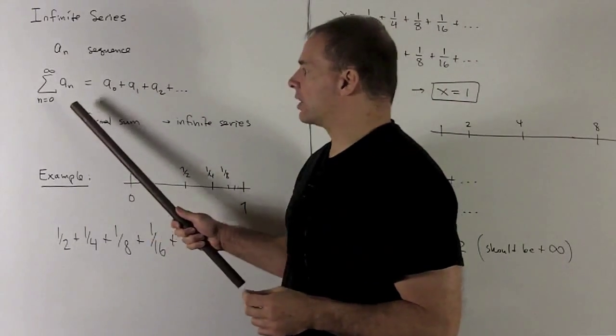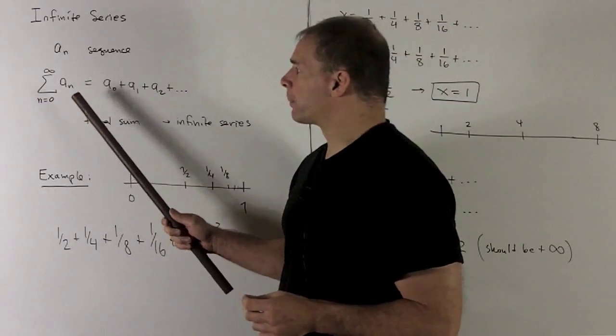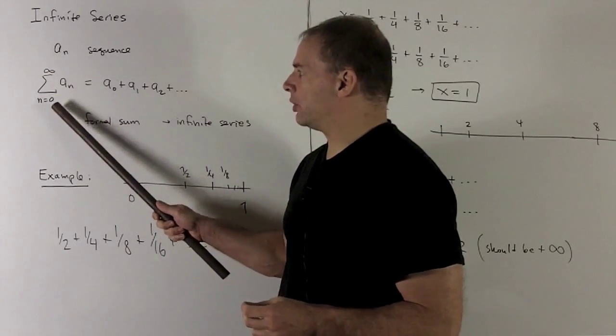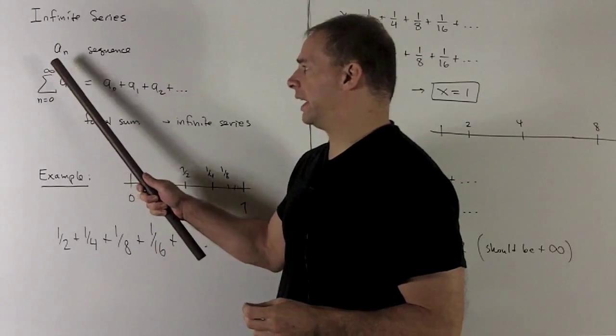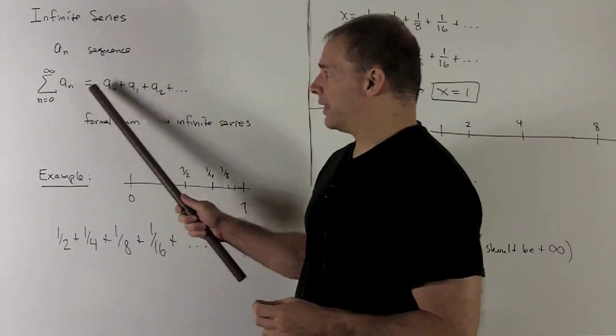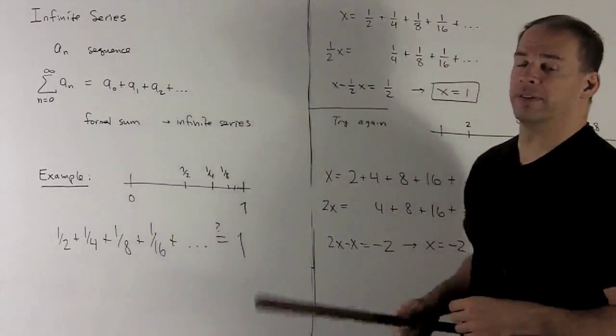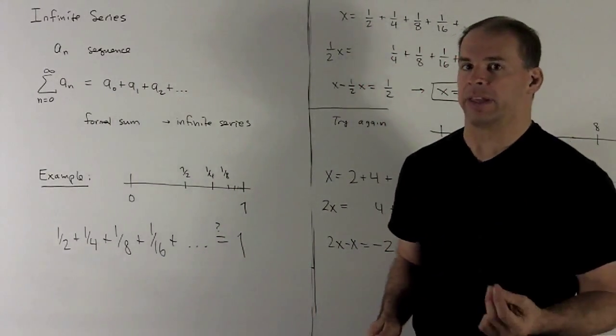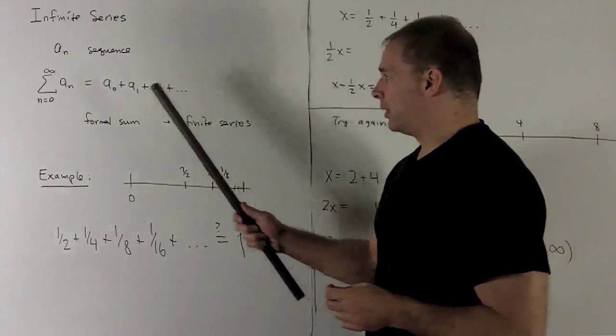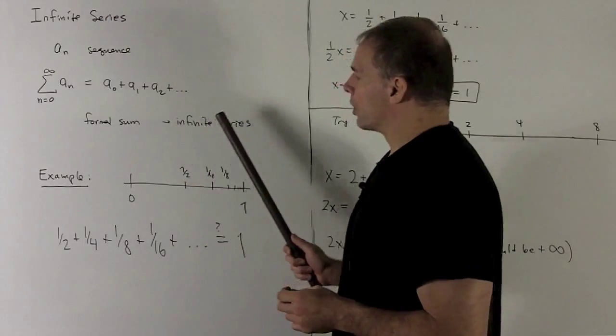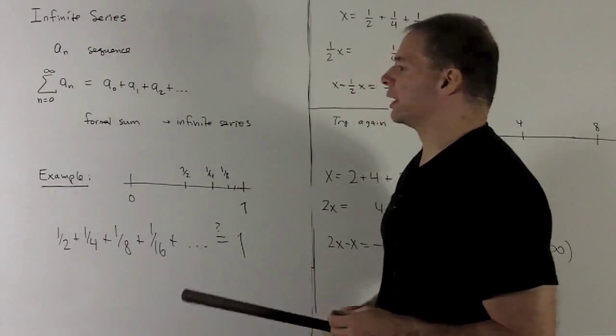So notationally we'll write it like this, it'll be a summation formula. So we'll have a sigma, n going from some lower limit, usually 0 or 1, to infinity. And we can also write this as a0 plus a1 plus a2, and we'd let it trail off, assuming we're adding everything somehow. This is just going to be called a formal sum, and we'll call this whole thing itself an infinite series.